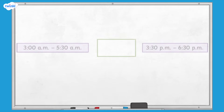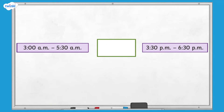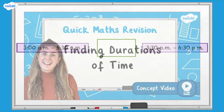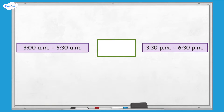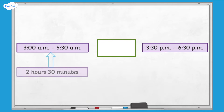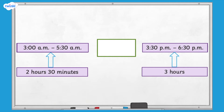If we wanted to compare these two durations, we would need to work out the length of each duration first. If you'd like to find out more about finding durations of time, you can check out our video on the Twinkle website. The duration of the first activity is 2 hours and 30 minutes, and for the second activity, the duration is 3 hours. Therefore, the duration of the first activity is less than the second activity.